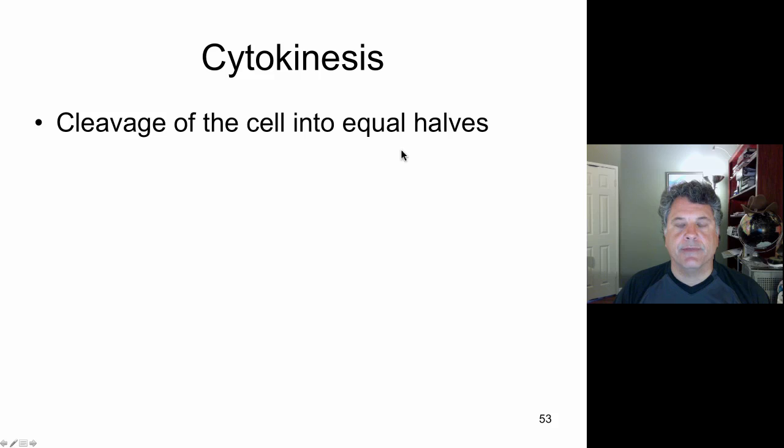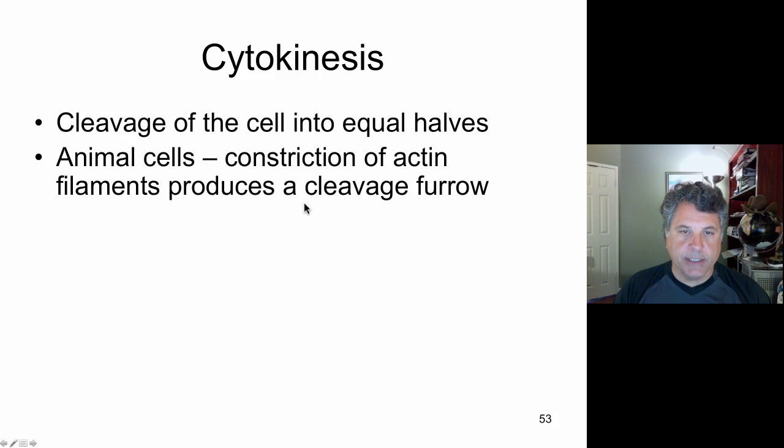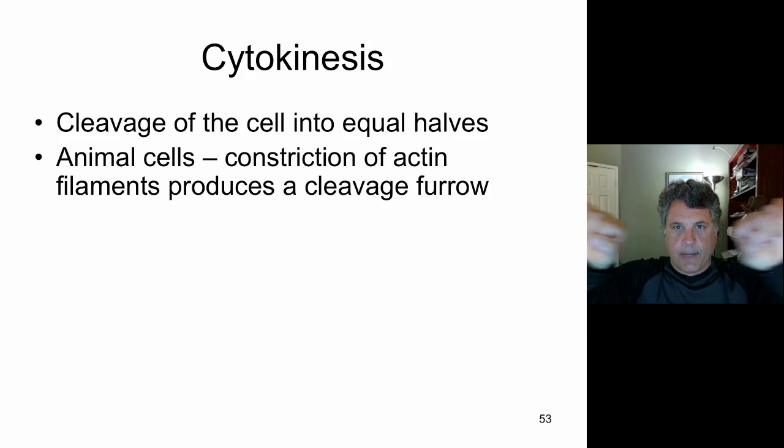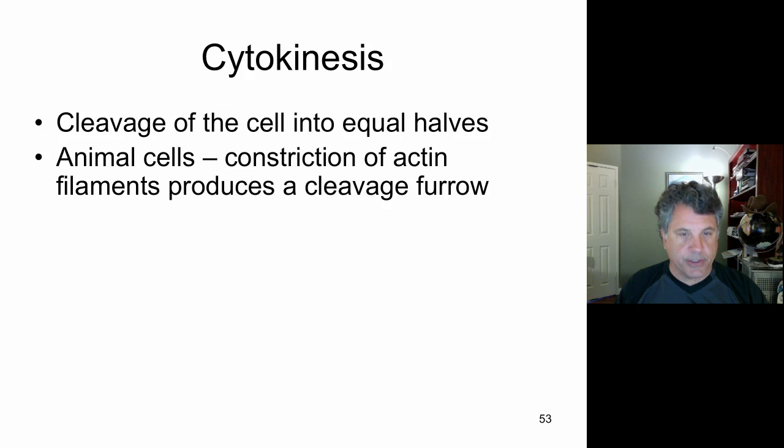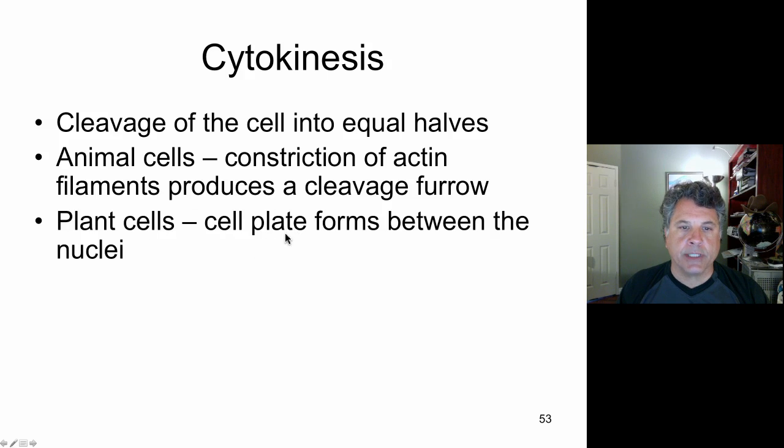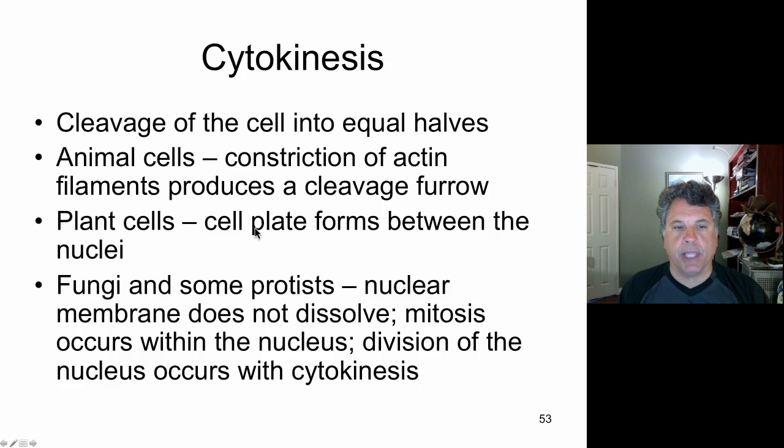And finally then cytokinesis is the cleavage of the cell into equal halves. In animal cells that cleavage occurs by a constriction of rings of actin filaments that slide past each other and as they do they create a cleavage furrow which separates the two cells. Whereas in plant cells a structure that we call the cell plate forms between the two daughter nuclei now. The cell plate is a real structure unlike the metaphase plate. The cell plate is a structure that has plasma membrane components, vesicles that are plasma membrane components, assemble in a region we call the plate.